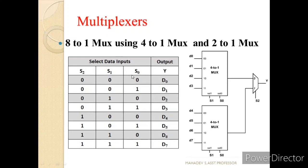An 8-to-1 multiplexer can also be implemented using two 4-to-1 MUXes and one 2-to-1 MUX. The output Y uses a 2-to-1 multiplexer with one select line. Since only one select line is present, we use the MSB bit, which is S2. When S2 is 0, D0 to D3 are selected via the first 4-to-1 MUX, and when S2 is 1, D4 to D7 are selected via the second 4-to-1 MUX.